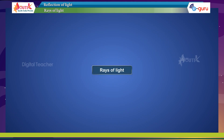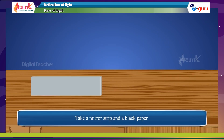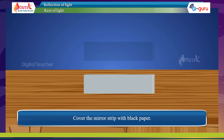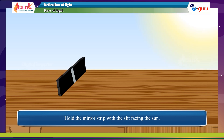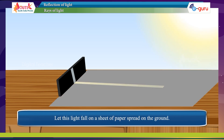Trace of light activity: Take a mirror strip and a black paper. Cover the mirror strip with black paper and cut a 1 mm width slit in the black paper. Hold the mirror strip with the slit facing the sun. We will see some light coming through the slit. Let this light fall on a sheet of paper placed on the ground. Light coming from such a slit or any other small hole looks like a ray of light.